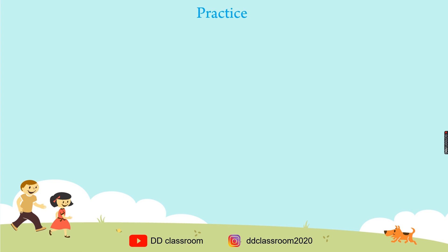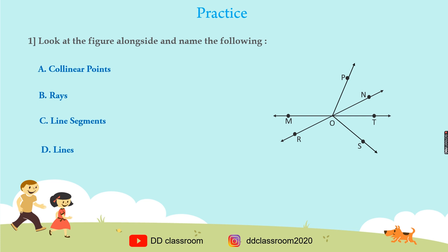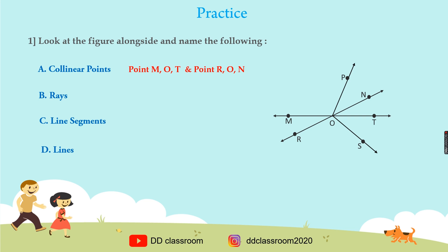Let's do the practice. Question one: Look at the figure alongside and name the following. Collinear points are point M, O, T and point R, O, N. Rays are ray OP, ray OS, ray ON, ray OR. Line segments are segment MT and seg RN. Lines are line RN and line MT.